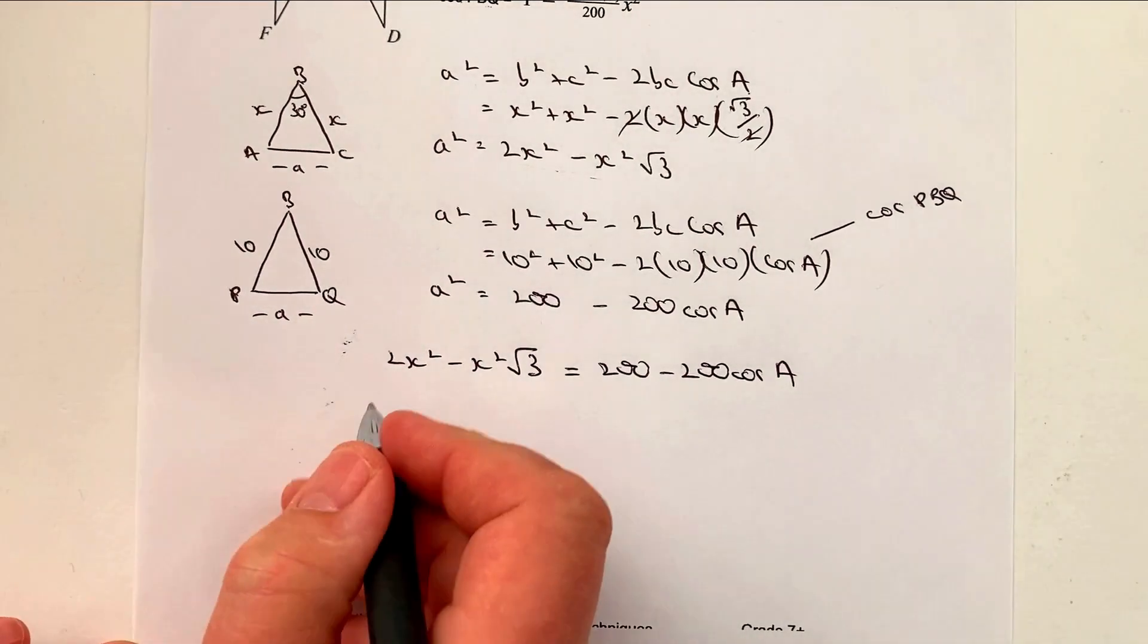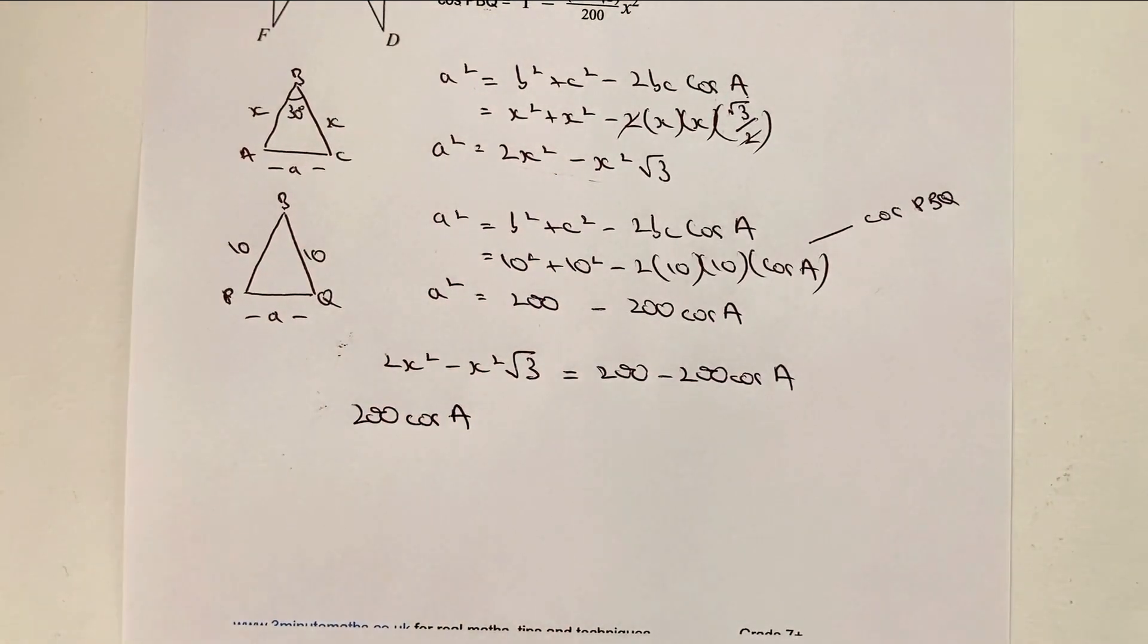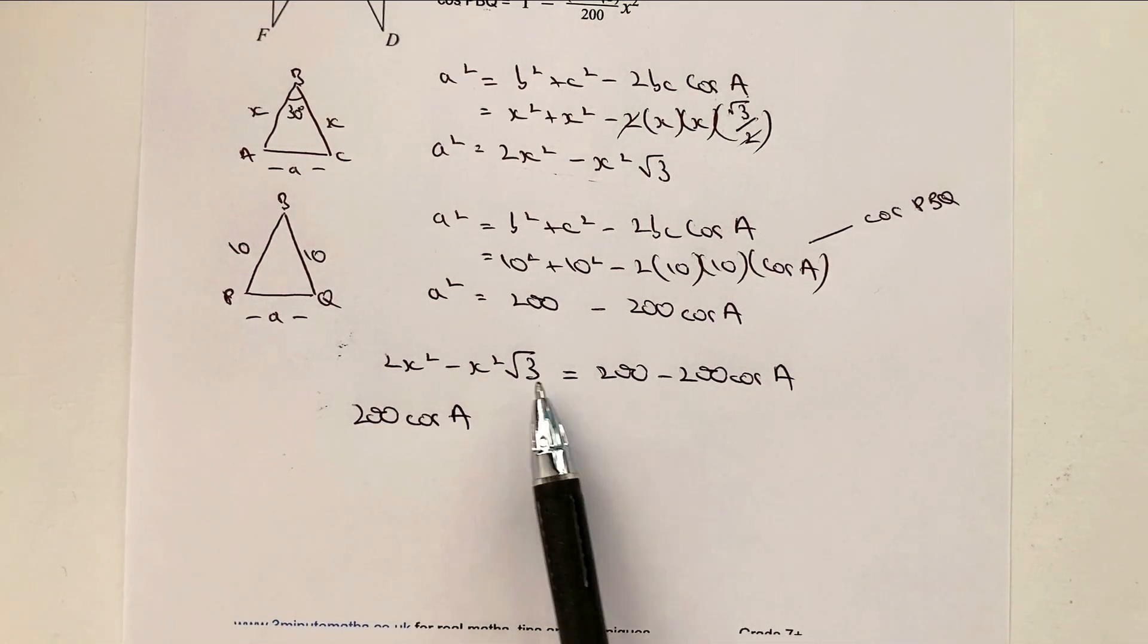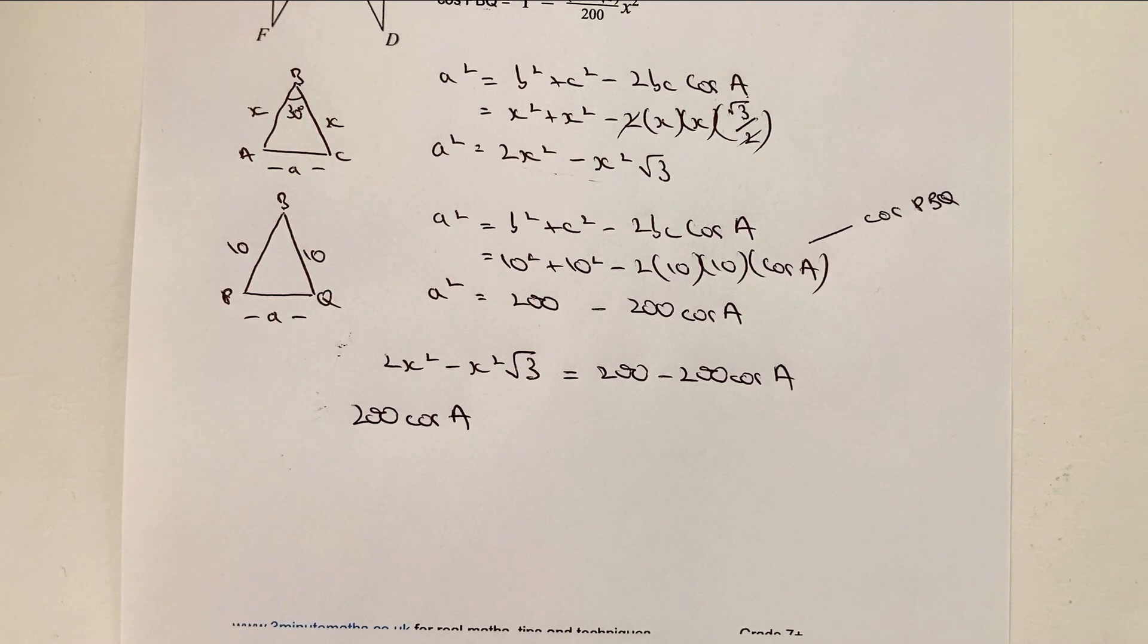And I'm going to make it the subject of the formula. 200 cosine A. Okay, hopefully that's all right for you. Now, everything else, this is going to go onto the right-hand side of the formula.